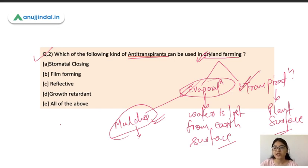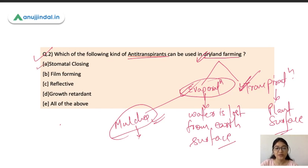For transpiration — water loss from the plant surface — there are different methods. These include stomatal closing, film forming, and reflective growth retardants. So the correct answer is all of the above; all these methods can be used as anti-transpirants.